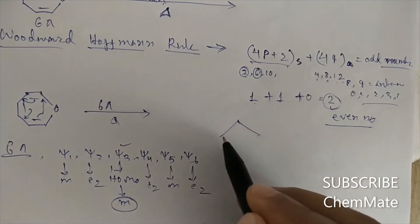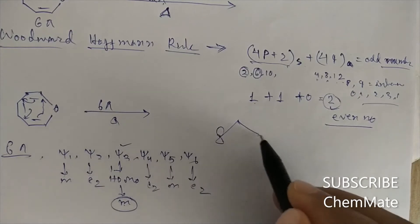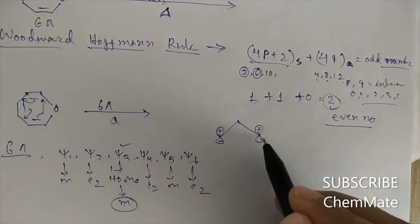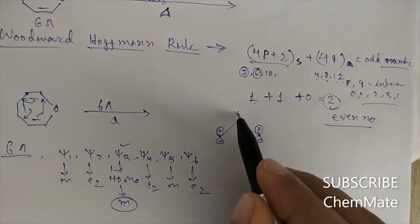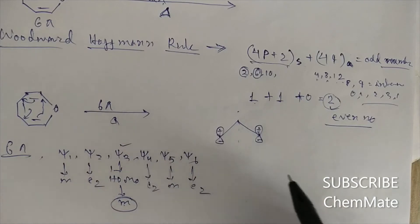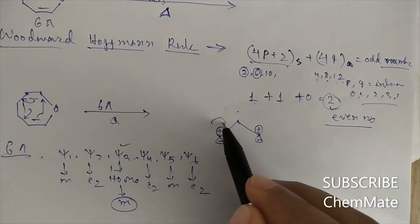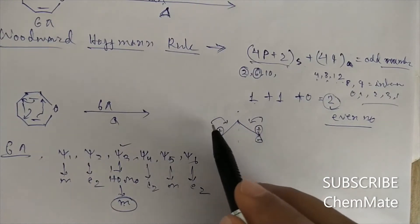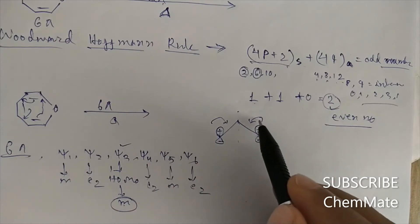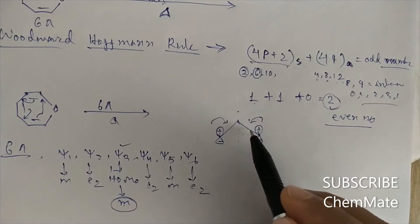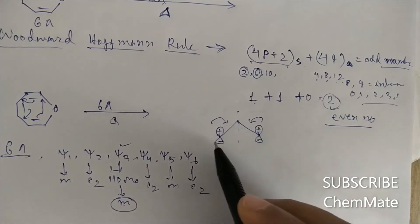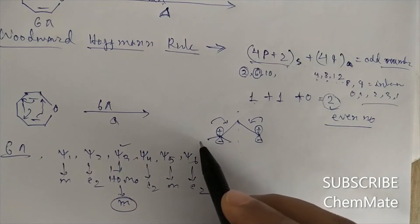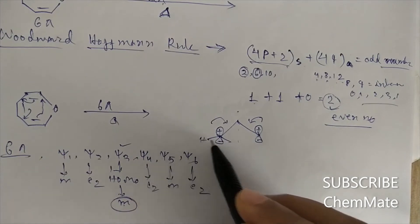For bonding interaction with mirror symmetry, we have to rotate in the clockwise direction or alternatively in the anticlockwise direction. Let's examine how the hydrogens are oriented during this rotation.